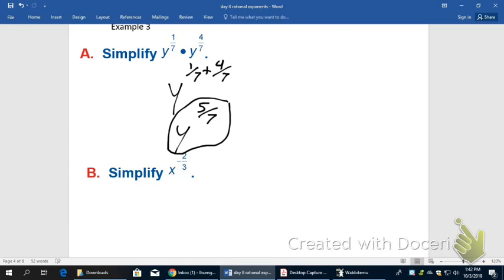You just type into it 1/7th plus 4/7ths, and it'll spit out 5/7ths for you.